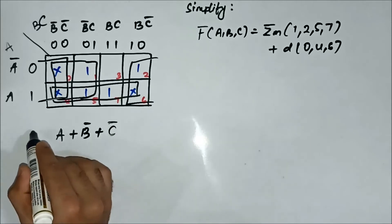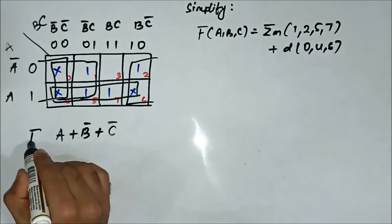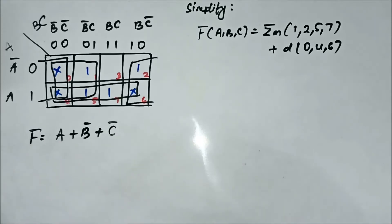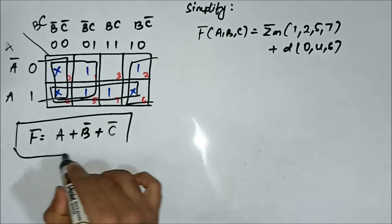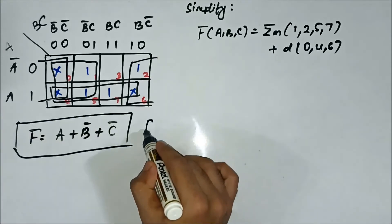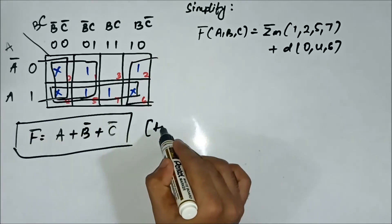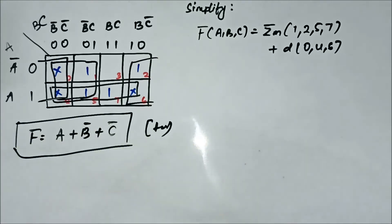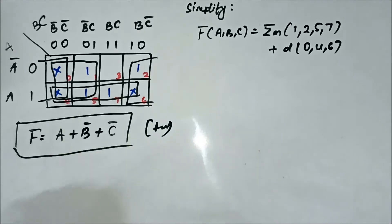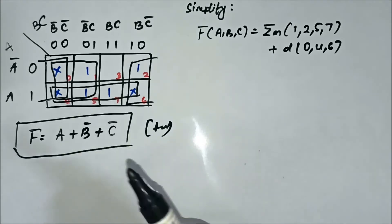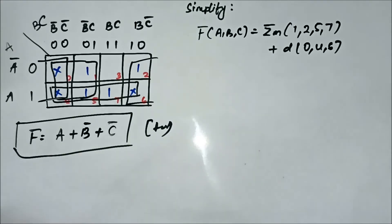So this is the simplified Boolean expression. This concludes the second question related to SOP KMAP simplification for don't-care values.